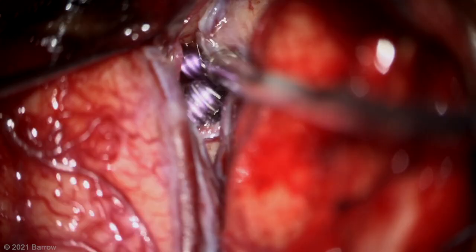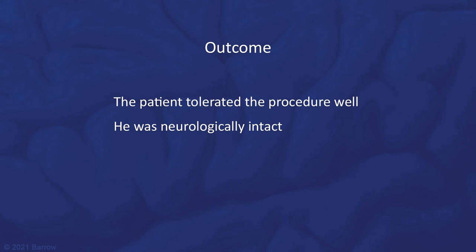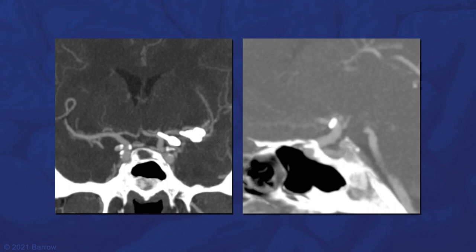Here is the overview showing how the sylvian fissure, and around the corner the carotid terminus, all come into view through this mini-pterional exposure. The patient tolerated the procedure well, was neurologically intact, and was discharged home after a short stay. Postoperative imaging showed preservation of flow in all parent and branch vessels and elimination of both aneurysms.